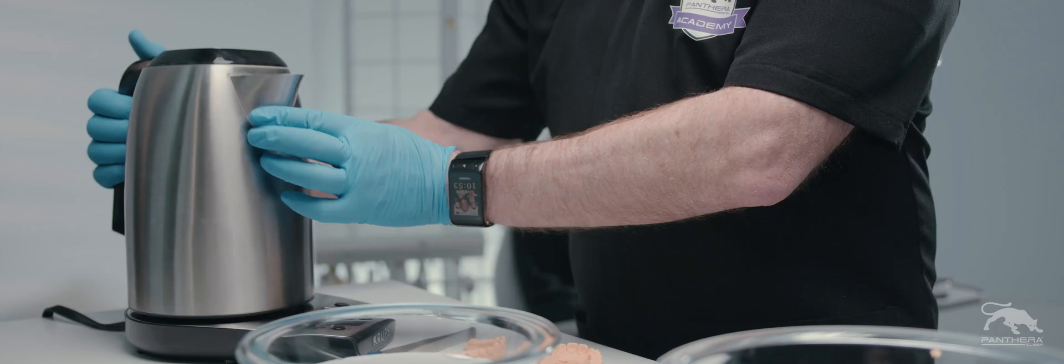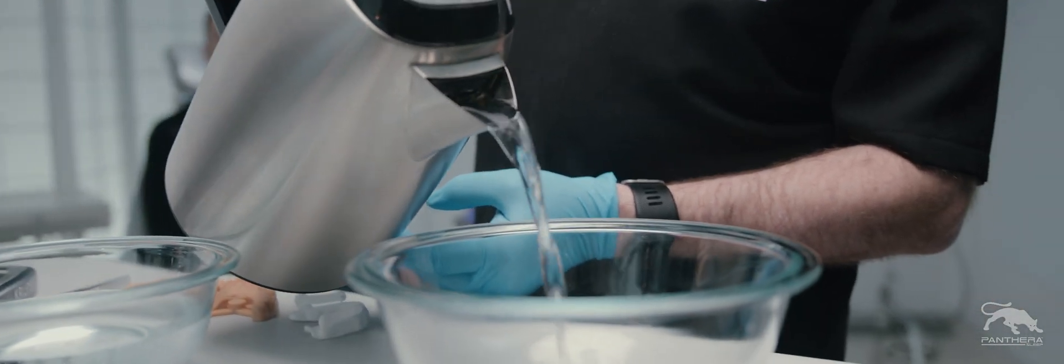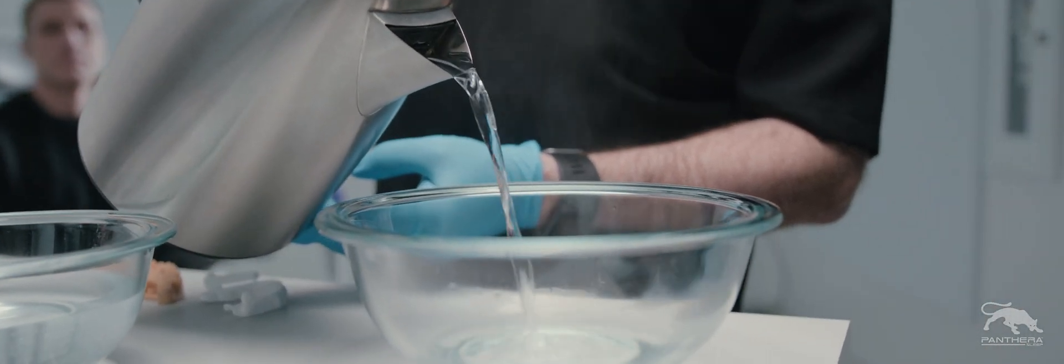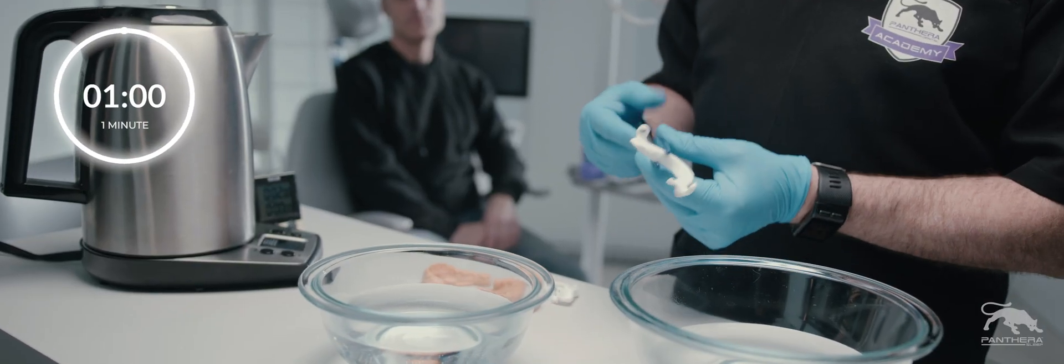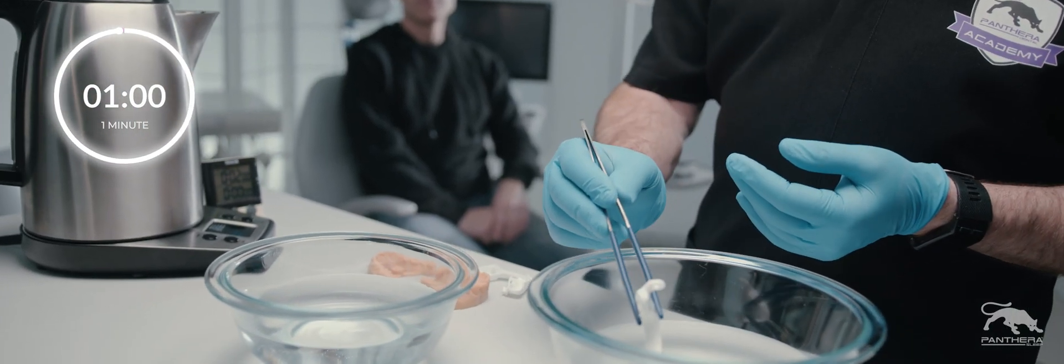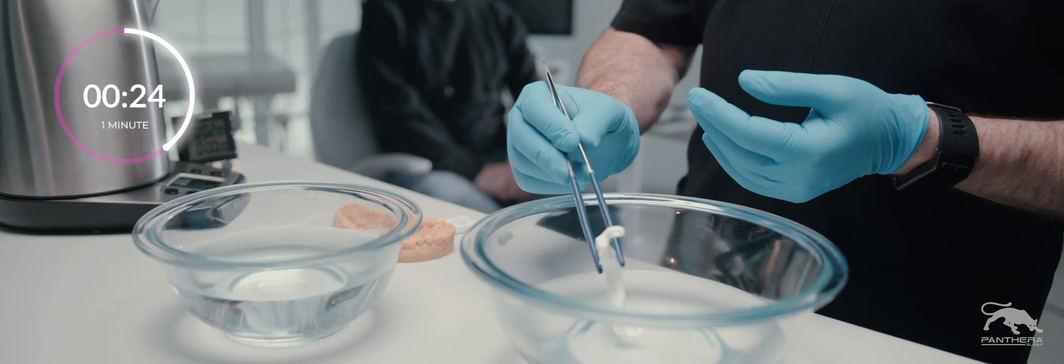Detach the rods from the oral appliance. Once reached, the temperature is appropriate to slightly soften the appliance without risk of deformation. Using pliers, dip the side of the splint that needs to be adjusted in hot water for about 1 minute.